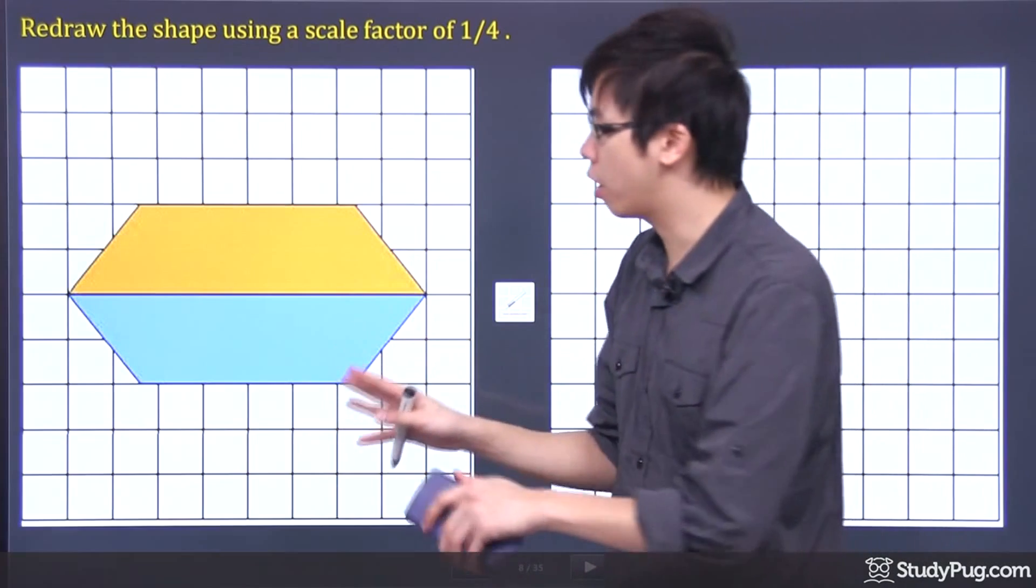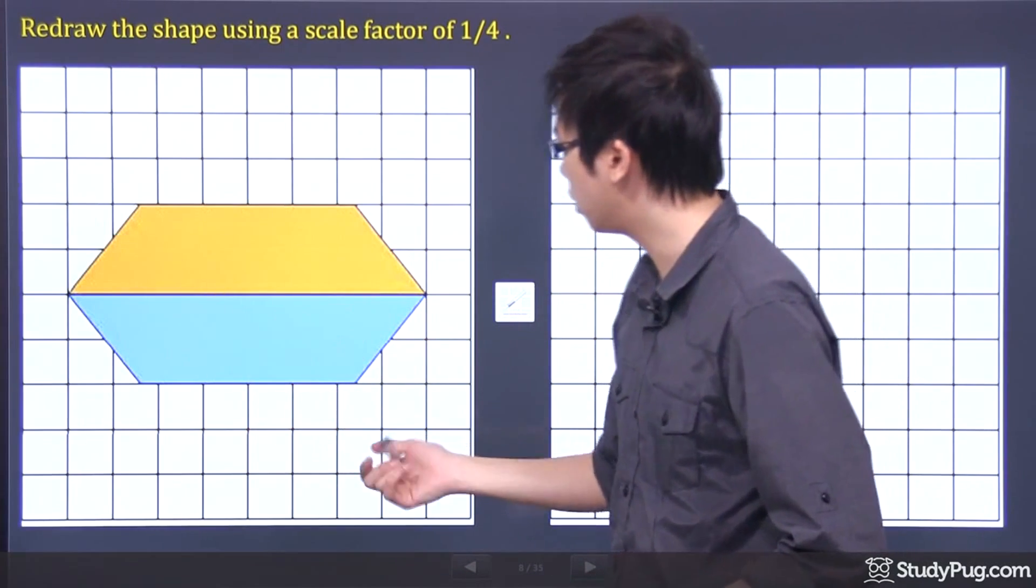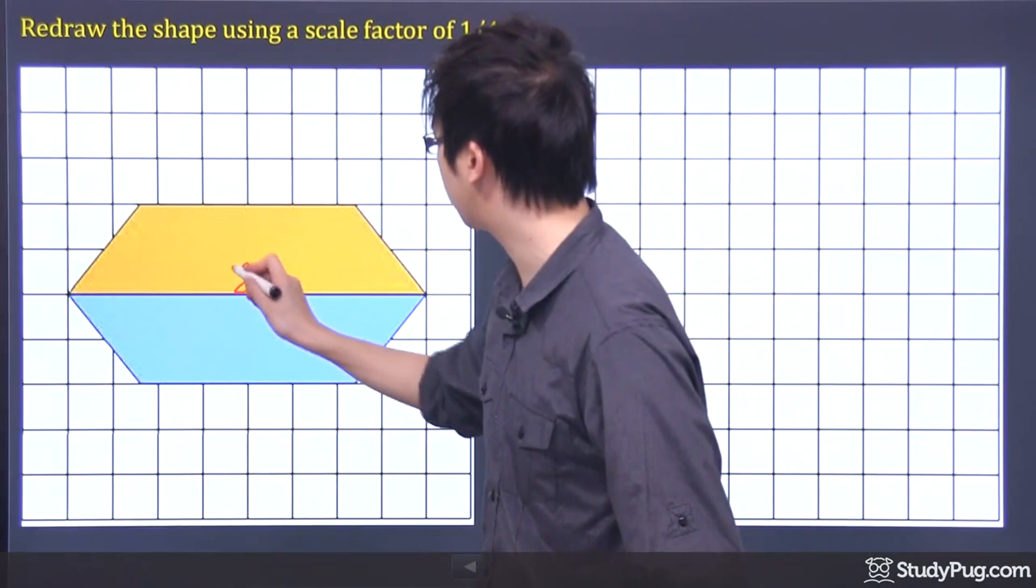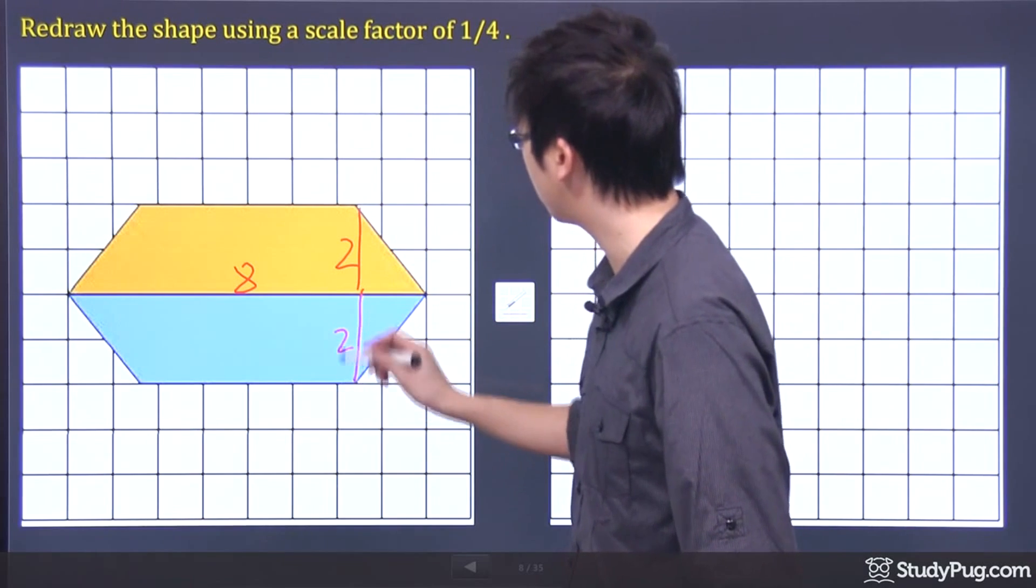What I'm going to do is figure out how many units you have from the original part first. If I count it from the middle line right there, that's about 8 boxes in total. And the height here is 2 boxes here and 2 boxes here.